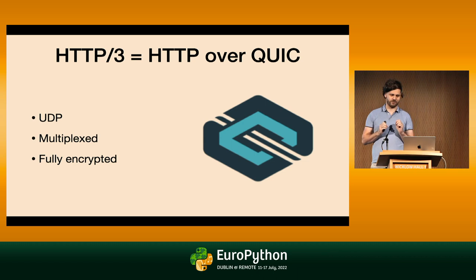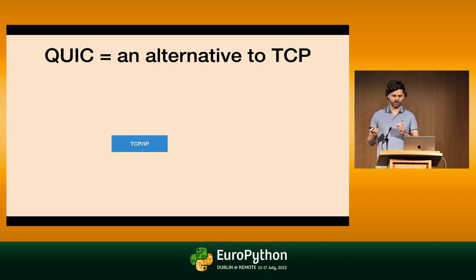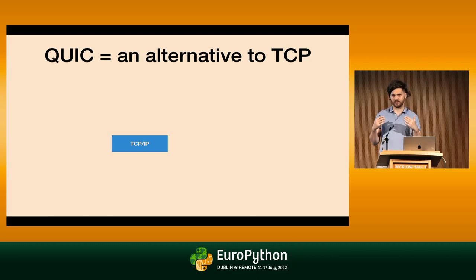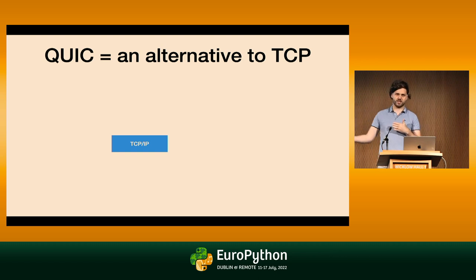HTTP/3 is HTTP over QUIC. So the question really is: what is QUIC? That's a little bit more difficult to explain and we don't have much time, but I will try to give you a short introduction. QUIC is an alternative to TCP on top of UDP. TCP is a protocol that has powered the internet since the 80s and it's implemented in operating systems. Your apps can open a TCP socket, write data to it, and the data will get to a remote site — complete and in order.